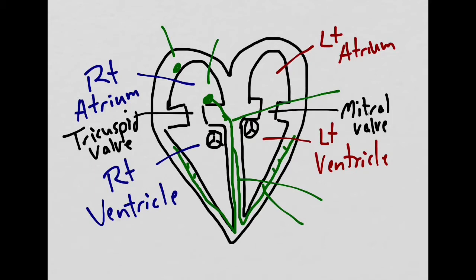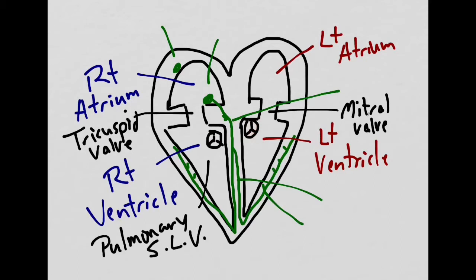This valve is the pulmonary semilunar valve, where the right ventricle will push blood through it to the lungs. This valve is the aortic semilunar valve, and the left ventricle when it contracts will push blood throughout the aorta to the rest of the body.